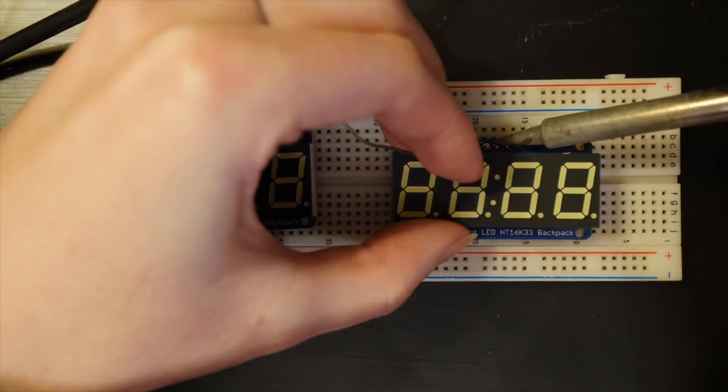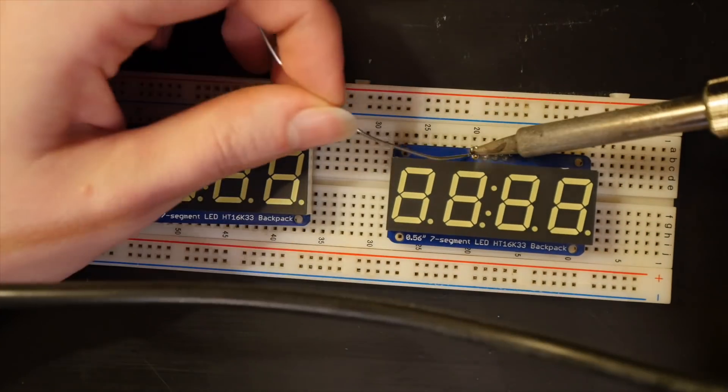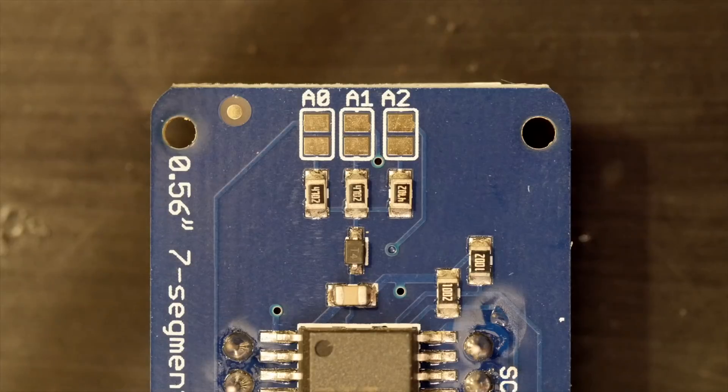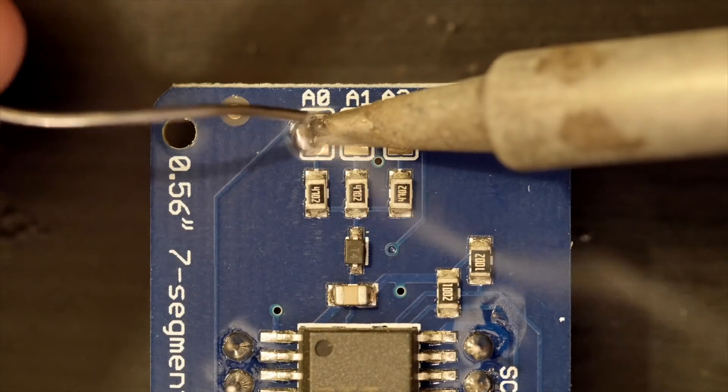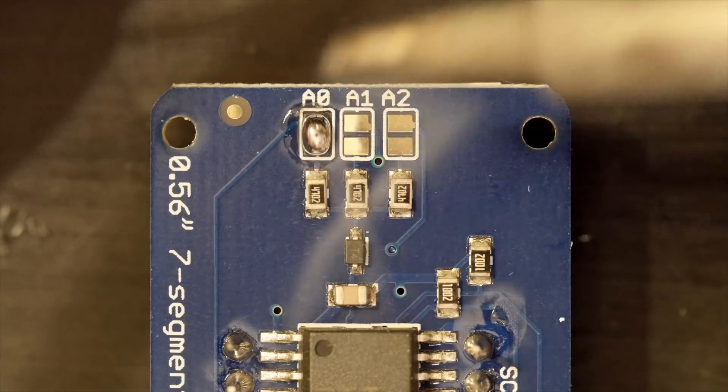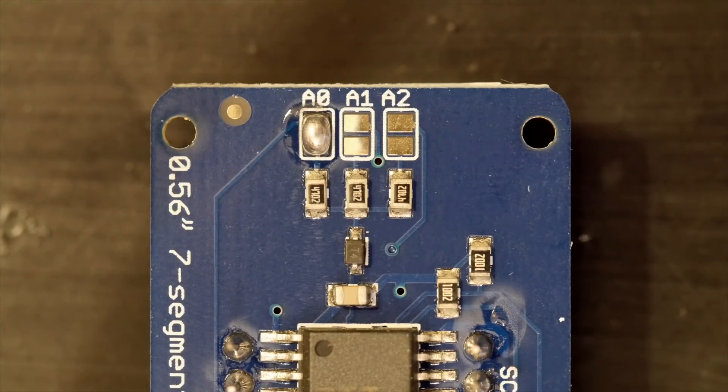The backpacks make it super easy to communicate with the displays using only two pins over I2C. The way the microcontroller can talk to more than one display is to change its I2C address by bridging one or more of these address pads on the back.